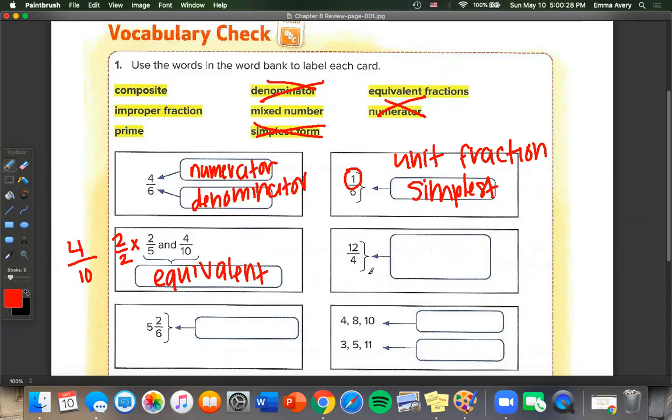Now we have 12 over 4. We know that if our numerator is greater than or equal to our denominator then that is an improper fraction. And this one we have 5 and 2 sixths. Well that is a whole number and a fraction so this one must be a mixed number.